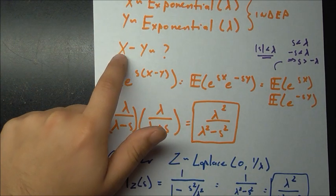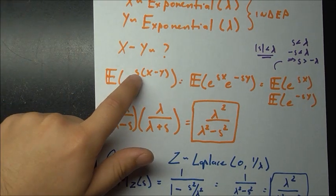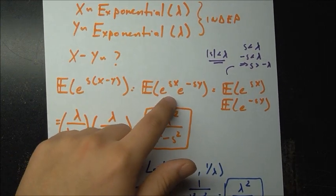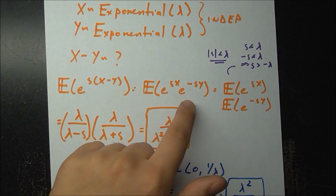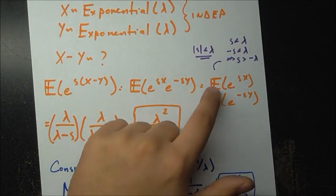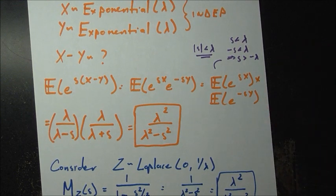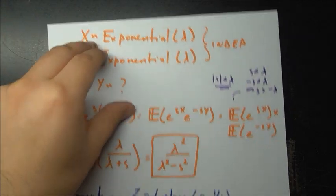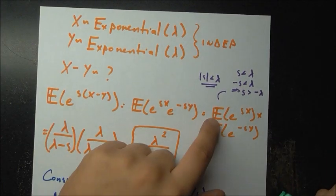We find the MGF of x minus y by computing E[e to the s(x minus y)]. By laws of exponents this splits into E[e to the sx] times E[e to the minus sy]. Since x and y are independent, the expected value of the product is the product of the expected values. We know the MGF of an exponential is lambda over lambda minus s, valid under a certain condition.